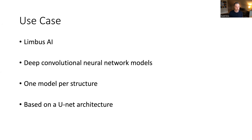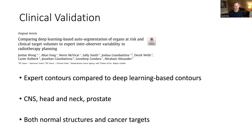We're going to look at a use case from a company called Limbus AI — I have no affiliation with them, but I think what they're doing is quite impressive. They use deep convolutional neural network models with one model per structure, based on U-Net architecture. I'd encourage you to reach out to the company directly for more details. This is an early clinical validation study; they have many, all published on their website and generally available through open access.